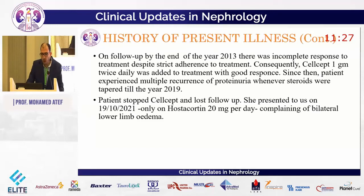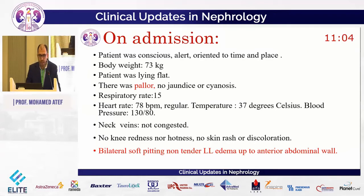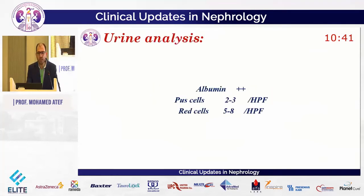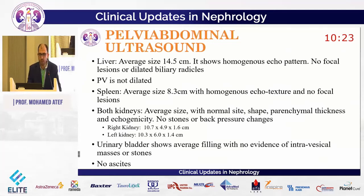The patient was lost to follow-up and presented again on 19 October 2021, on prednisone 20 mg per day, complaining of bilateral lower limb edema. Past history was unremarkable for nephrotic syndrome. Family history was relevant with one previous admission in our department. Examination showed bilateral lower limb pitting edema extending up to the level of the thigh, and the patient was pale. Heart, chest, and abdominal examinations were unremarkable. Investigations showed urinalysis with albumin 2+, cells 2–3 per high-power field, and red cells 5–8. Abdominal ultrasound showed normal kidney sizes and normal echogenicity.